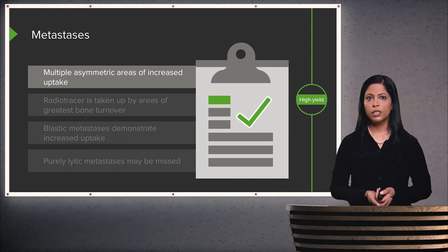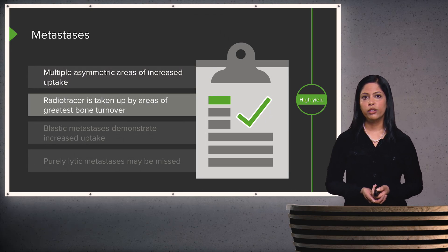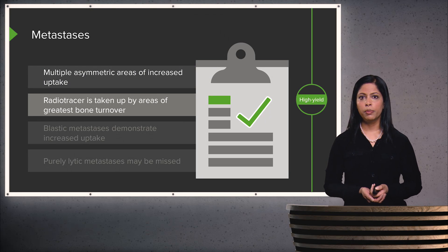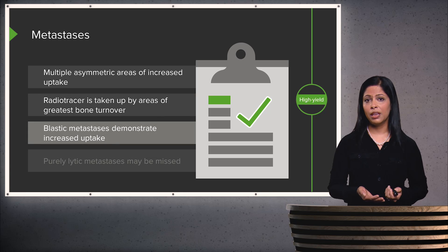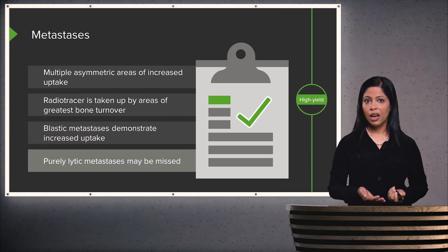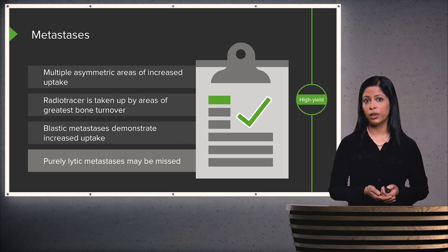Metastases appear as multiple asymmetric areas of increased uptake. Radiotracers are taken up by areas of greatest bone turnover, so blastic metastases demonstrate increased uptake. However, if you have a purely lytic metastasis, that may be missed because there isn't a lot of bone turnover in a purely lytic metastasis.